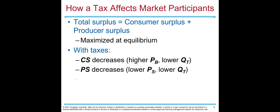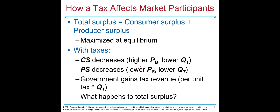From chapter 7, remember that total surplus is consumer surplus plus producer surplus, and it is maximized at equilibrium. With taxes, consumer surplus decreases because buyers pay higher prices Pb and buy lower quantity Qt. Producer surplus decreases because sellers receive Ps, which is lower than the equilibrium price, and they sell lower quantity Qt. The government gains tax revenue equal to T times Qt.